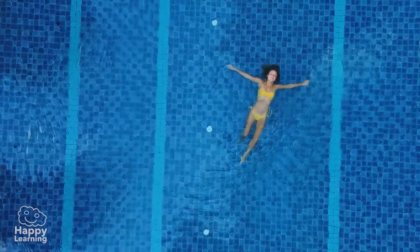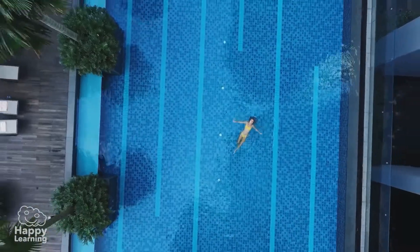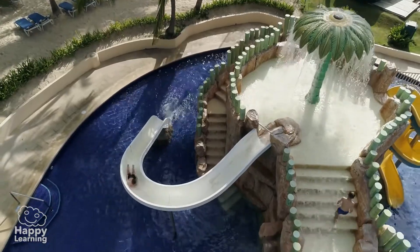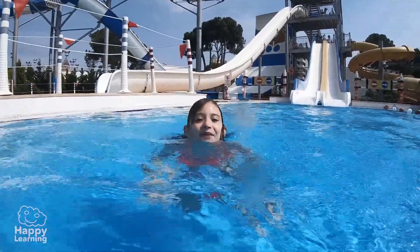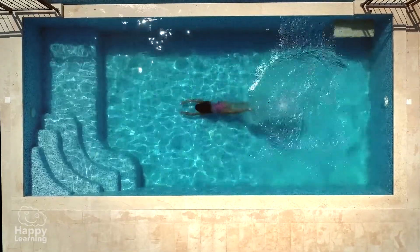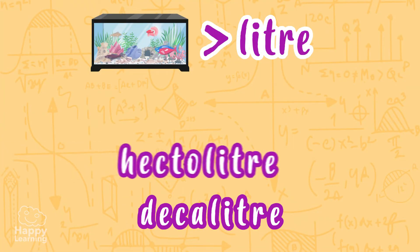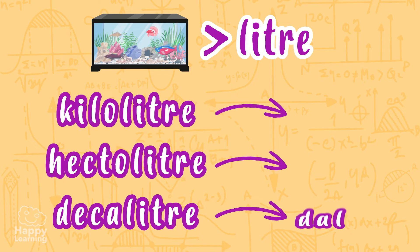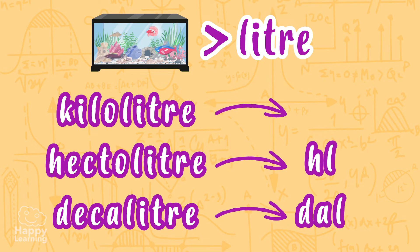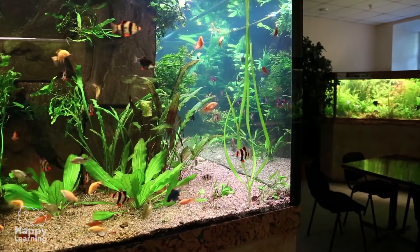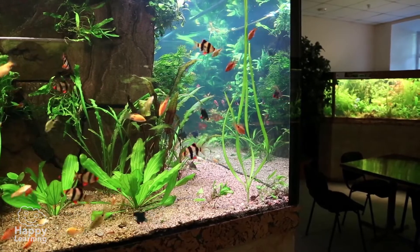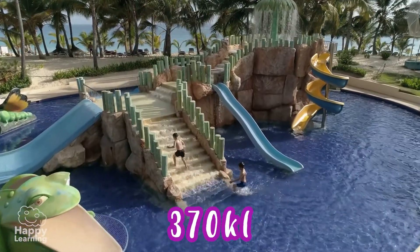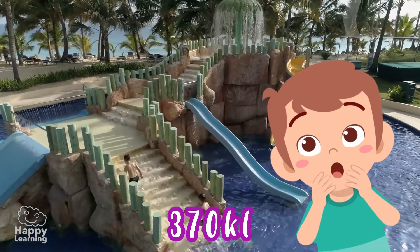But what if the containers are a lot bigger? Such as this fish tank or this pool. In this case, we use measurements bigger than the liter. They are the decaliter, hectoliter, and kiloliter, represented as DAL, HL, and KL. We can say that this fish tank holds 15 decaliters, and this pool holds 370 kiloliters. My goodness, that's a lot of water!